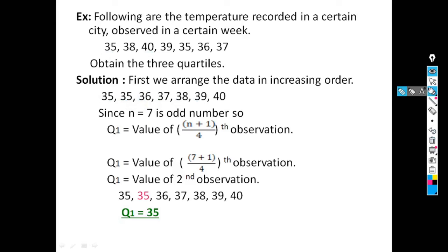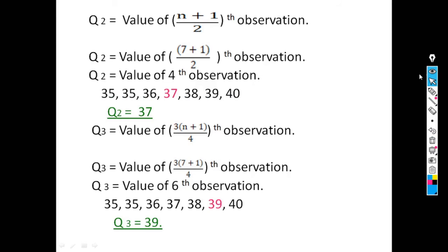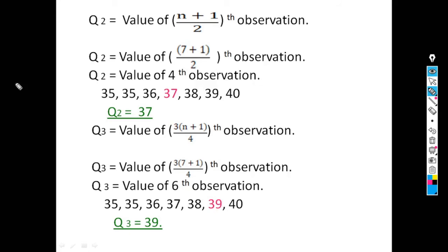Q2 = value of (7+1)/2 = value of 4th observation. The 4th observation from the arranged series is 37. So Q2 = 37.